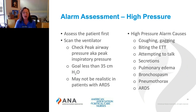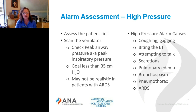The most common ventilator alarm is a high pressure alarm. Assess that patient first and then scan the ventilator. One thing to definitely look at is their peak airway pressure, also known as peak inspiratory pressure — ask your respiratory therapist or ICU nurse where to assess that. Normally the goal is less than 35 centimeters of water, but in ARDS patients with COVID-19, it may be set as high as 50.